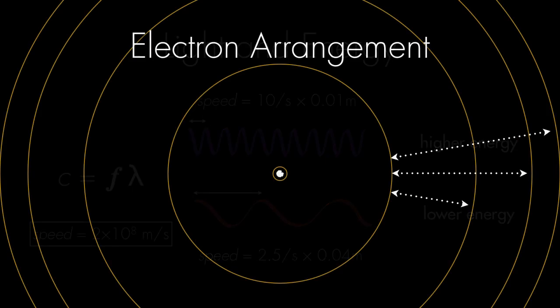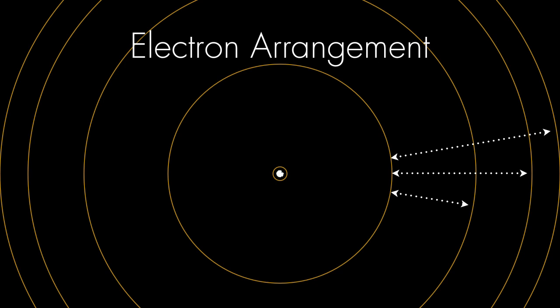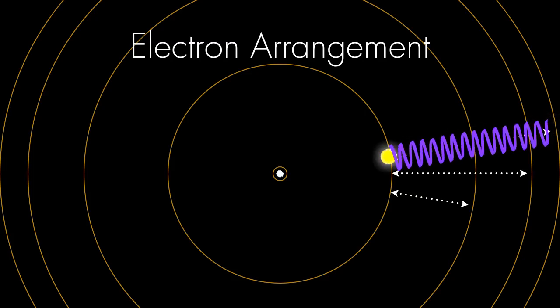Remember how the electron energy levels are spaced out in the Bohr model? Well, imagine an electron at one of these outer levels jumping down to a lower level. When it jumps down, it's going to release some high frequency, high energy light that might look purple to us.